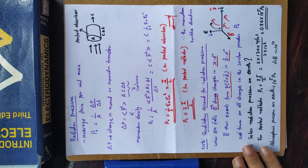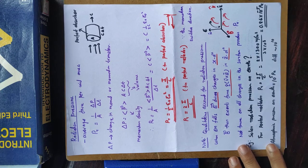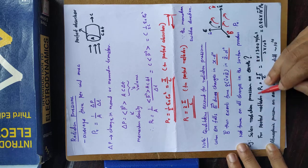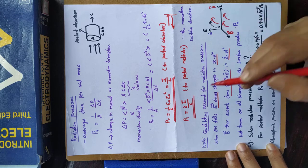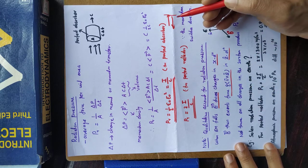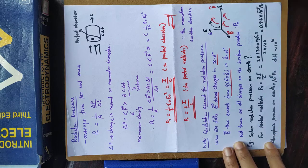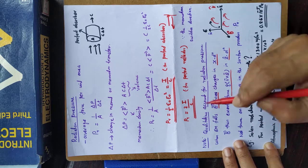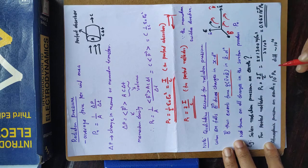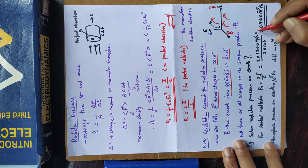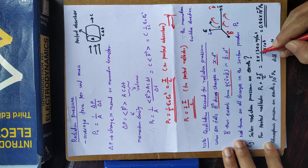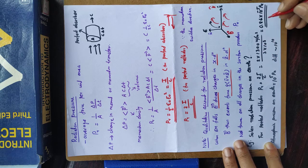Now, let us practically work out how large this radiation pressure is. What is the solar radiation pressure on Earth? For sunlight, assuming a perfect reflector, the radiation pressure is two times intensity over C. The intensity of sunlight on the surface of Earth is 1300 W/m². So, the radiation pressure is 2 × 1300 divided by the velocity of light, which gives 0.86 × 10⁻⁵ Pascal.